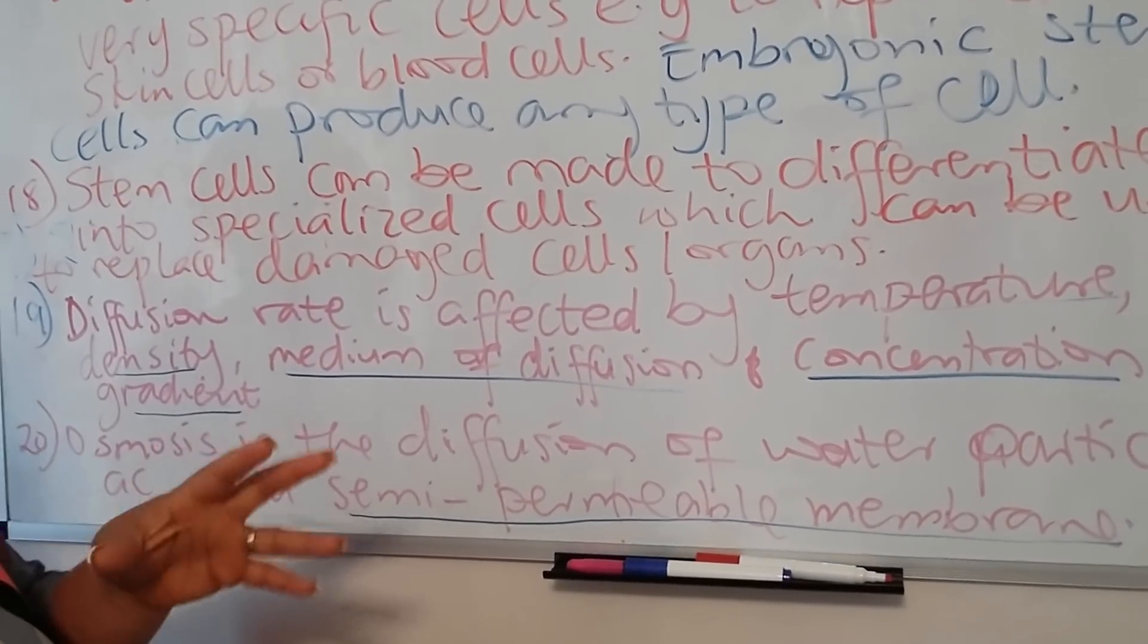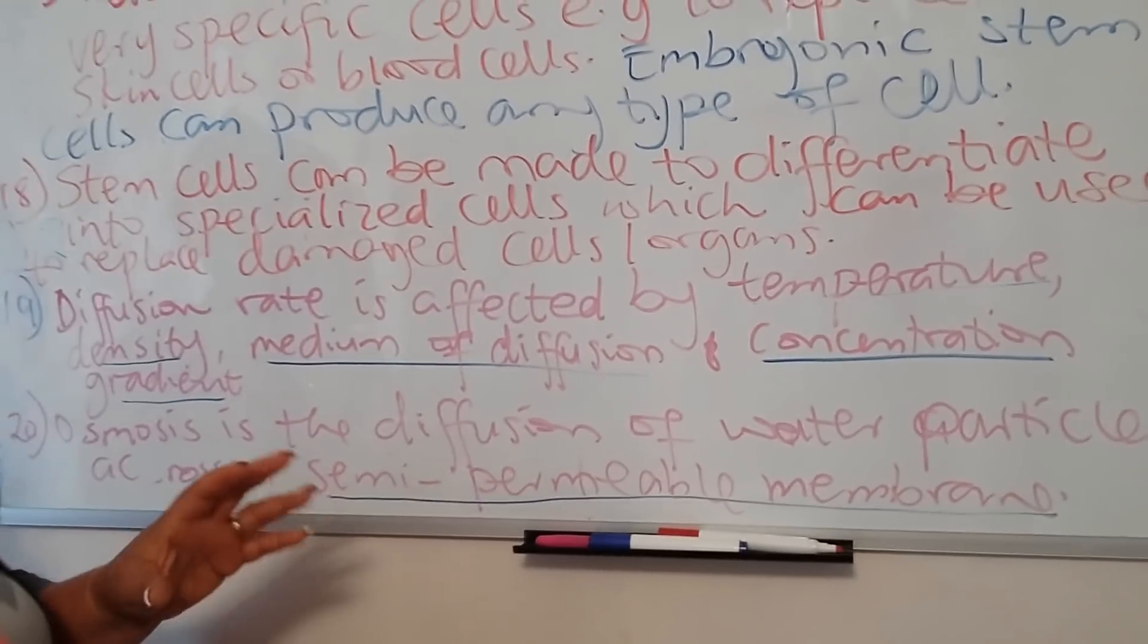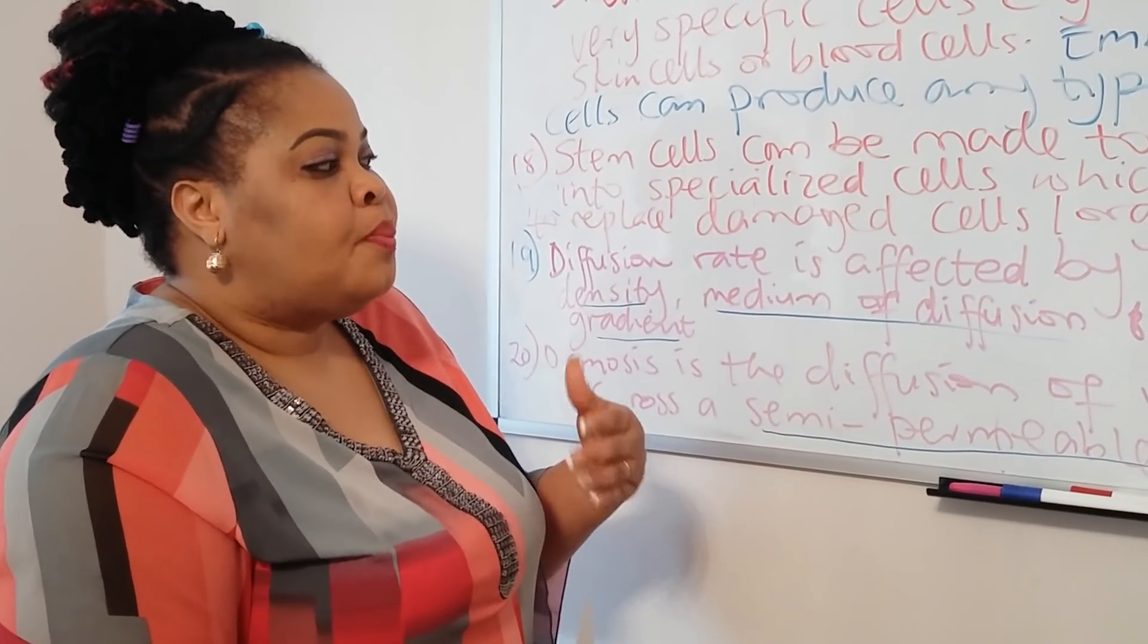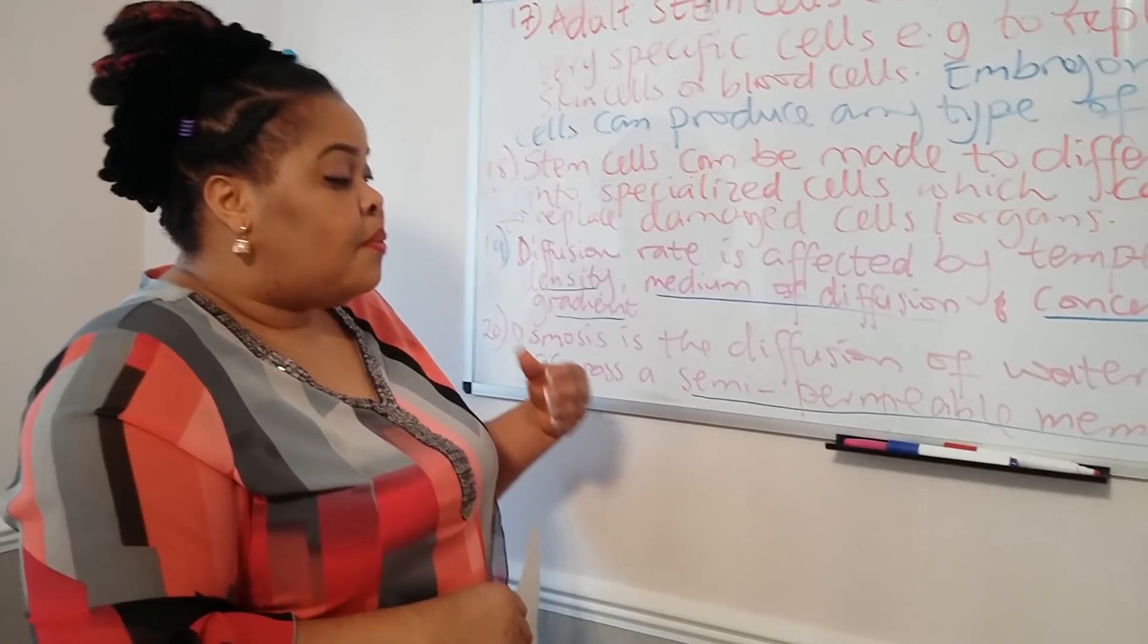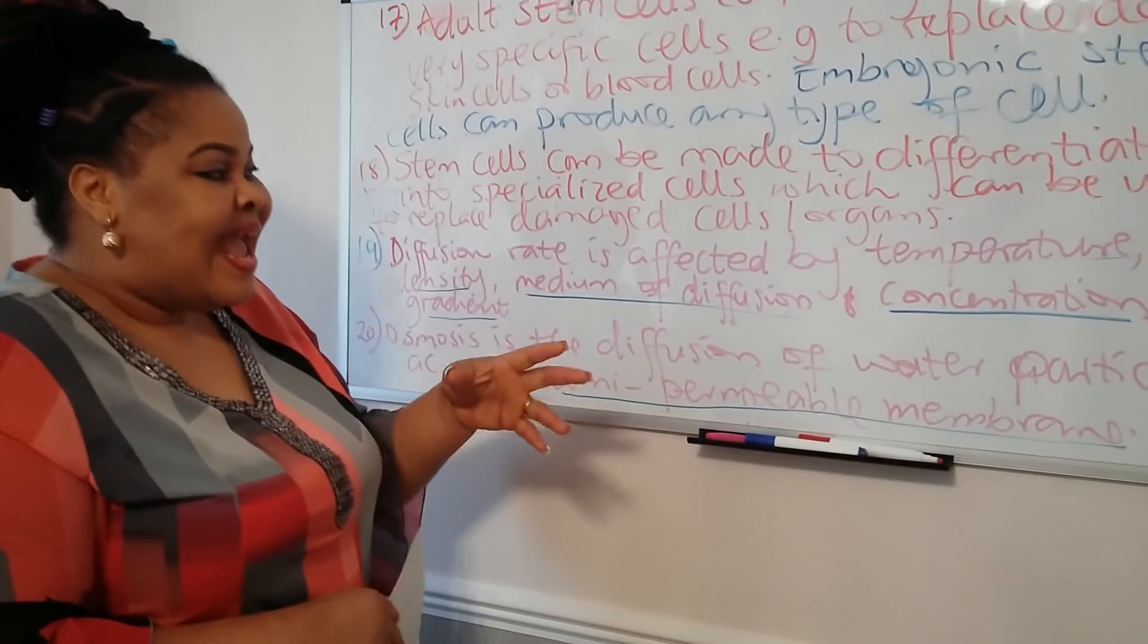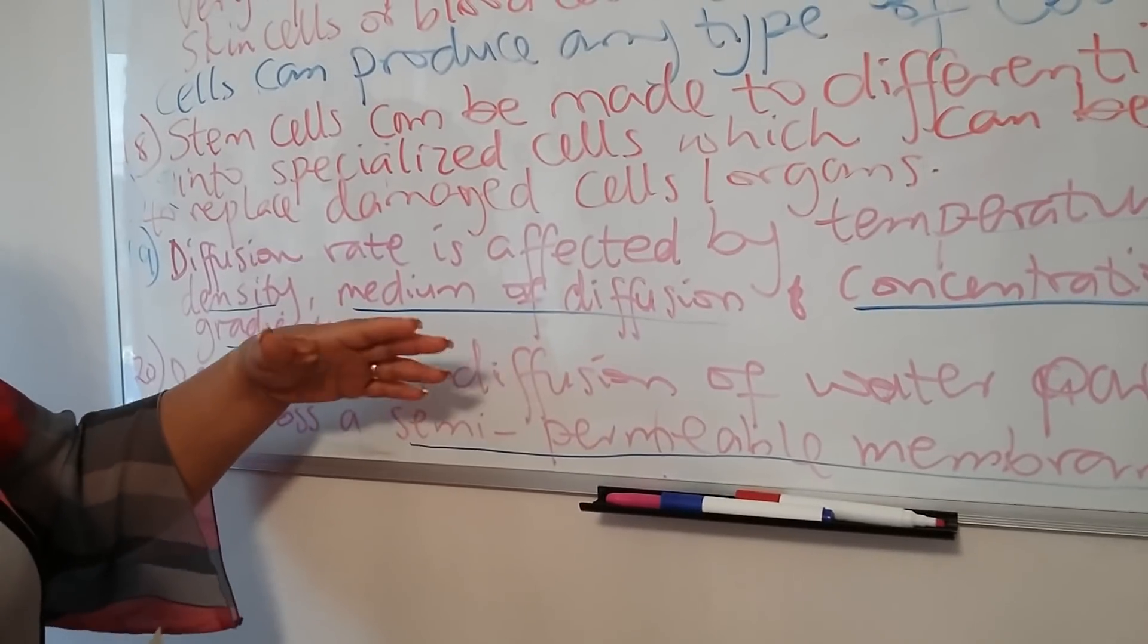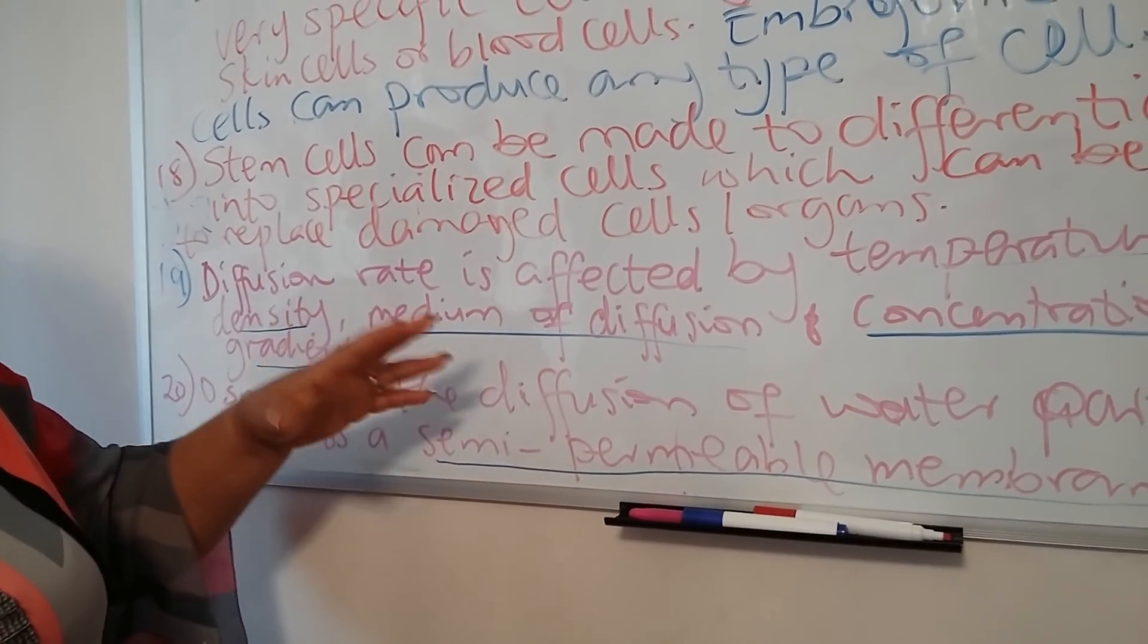If you have less of those particles there, the diffusing particles would flow across easily. But if you have a lot of molecules working against or trying to stop the diffusing particles from flowing through, that could slow down the rate of diffusion.